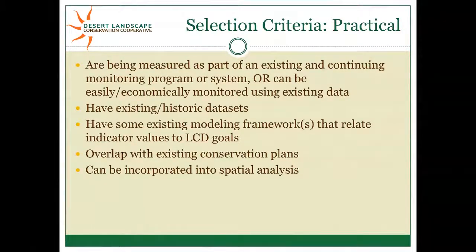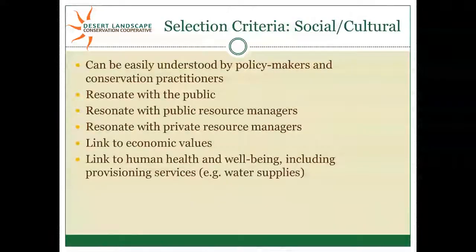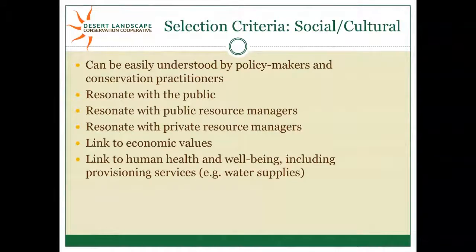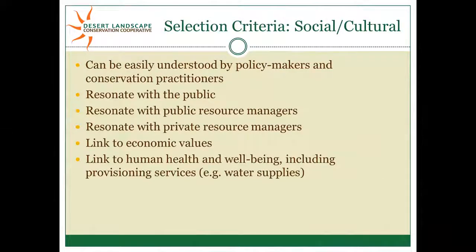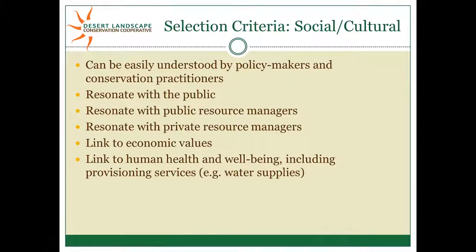The final suite are social and cultural criteria. The key thing is that we want indicators that make sense even outside a group of scientists — things that rally not only scientific teams but also public-private resource managers. Ideally, indicators link to economic values as well as human health and well-being.